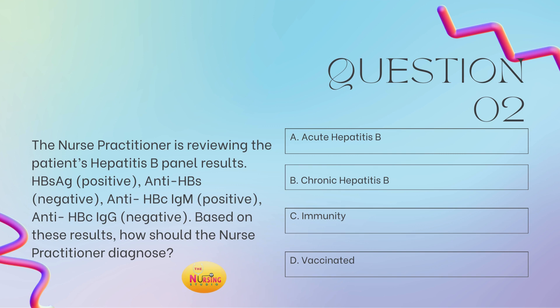All right, question number two. The nurse practitioner is reviewing the patient's hepatitis B panel results. The HBSAG is positive. The anti-HBS is negative. The anti-HBC IgM is negative. Based on these results, how should the nurse practitioner diagnose? Is it A, acute hepatitis B? B, chronic hepatitis B? C, immunity? Or D, vaccinated? Take a moment and tell me what you got in the comments.